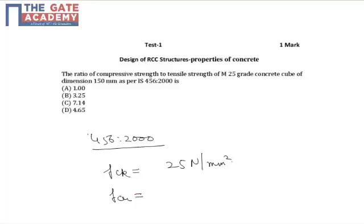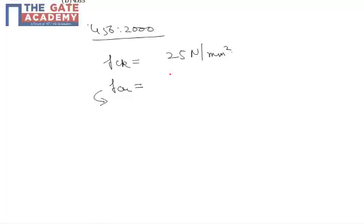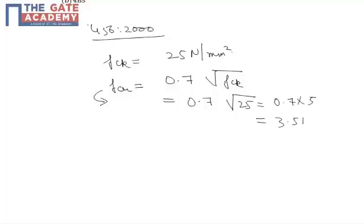fcr, that is tensile strength of this cube, will be 0.7 times square root of fck. So it comes out as 0.7 times square root of 25, that is 0.7 times 5, which equals 3.5 N per mm squared.